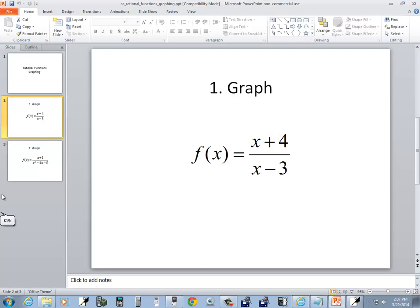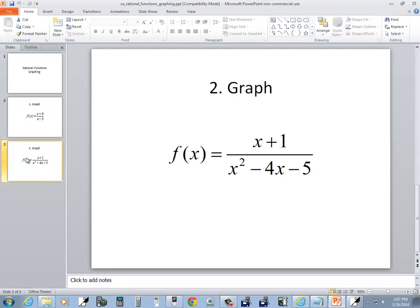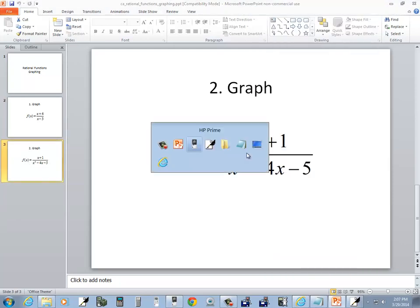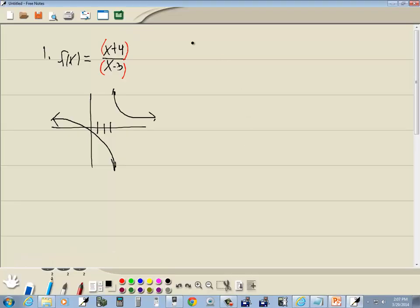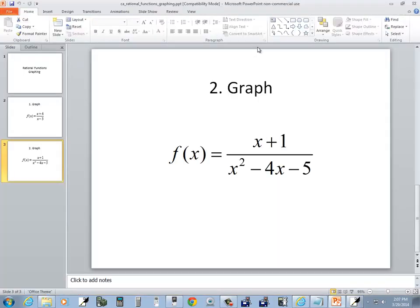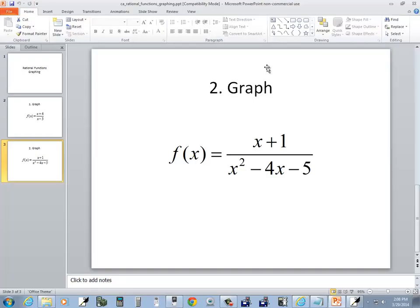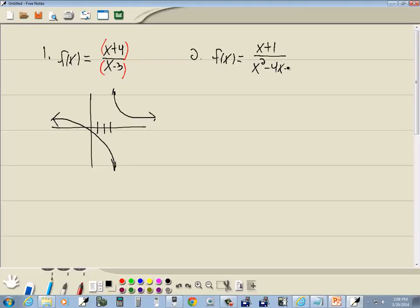Let's take a look at another one. F(x) equals x plus 1 over x squared minus 4x minus 5. Again, the trick to it is put parentheses around the top, parentheses around the bottom.